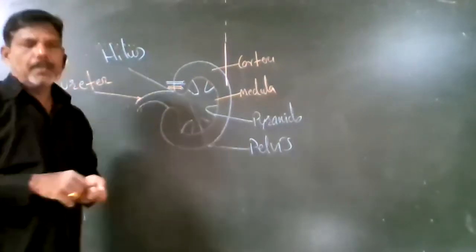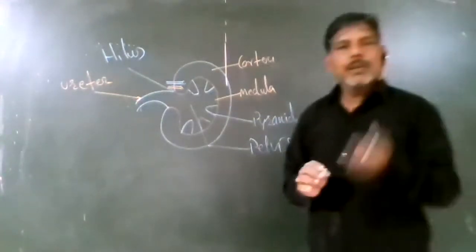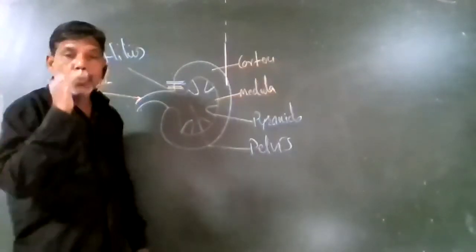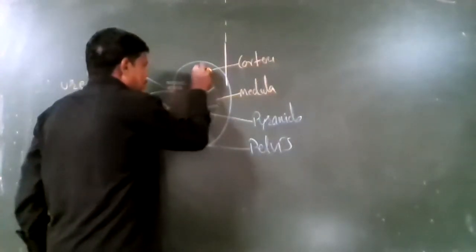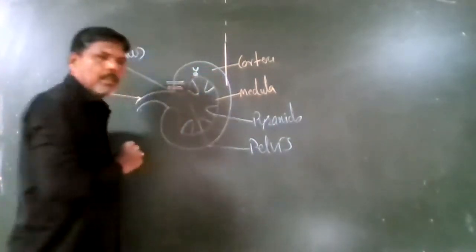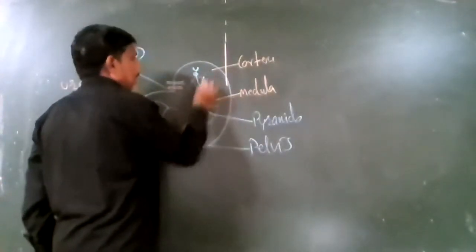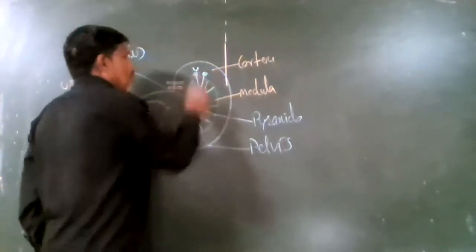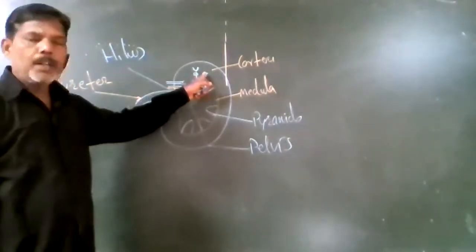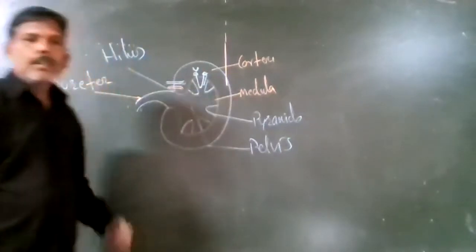There is one structure related to the kidney, which is the renal tubule or nephron. Nephrons are distributed into two regions. The collecting tubule lies in the cortex and the loop of Henle lies in the medulla. That means Bowman's capsule, the Malpighian body, proximal convoluted tubule, and distal convoluted tubule lie in the cortex, while the loop of Henle lies in the medulla.